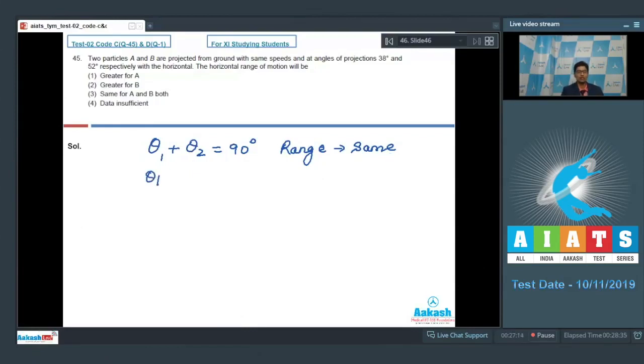In the question, let us assume theta 1 has been given to be 38 degrees and theta 2 has been given to be equal to 52 degrees. It is clearly visible that theta 1 plus theta 2, that is 38 plus 52, is actually equal to 90 degrees. Which means that the ranges for both the motions would be same, and hence option number 3 is the correct answer for question number 45.